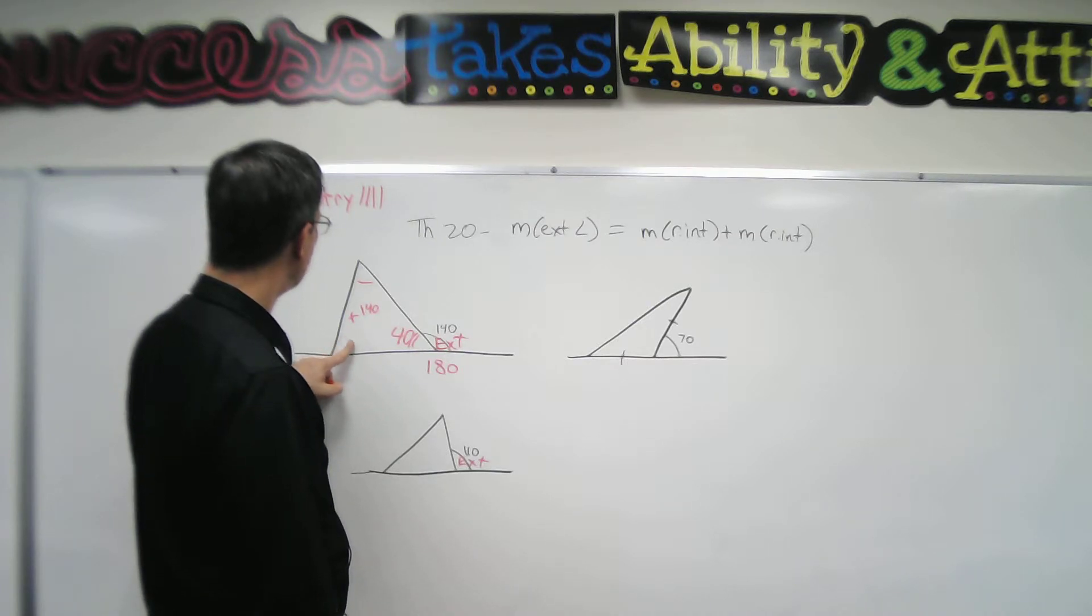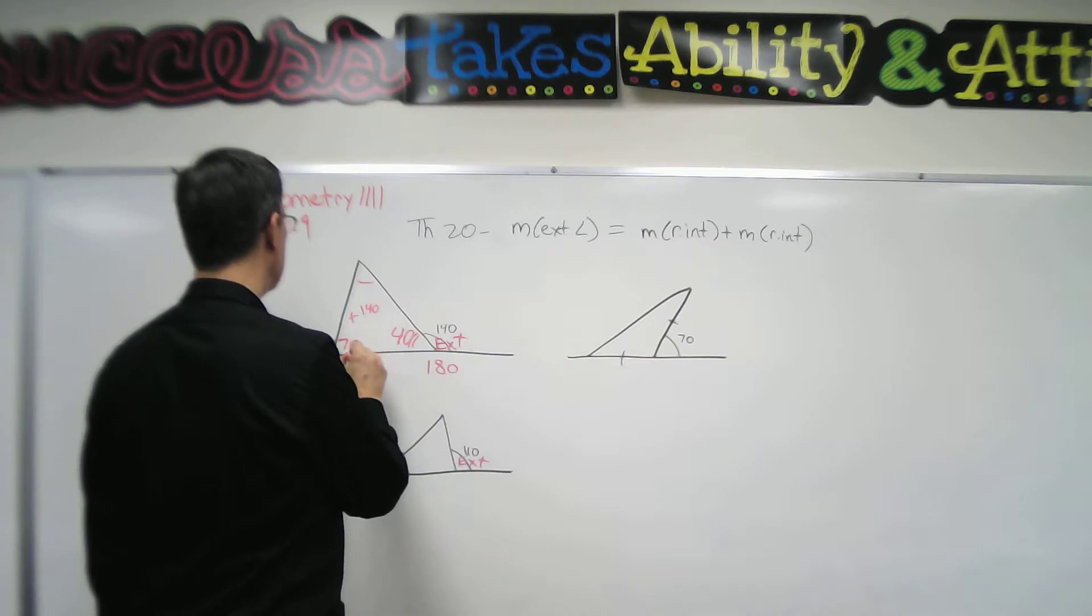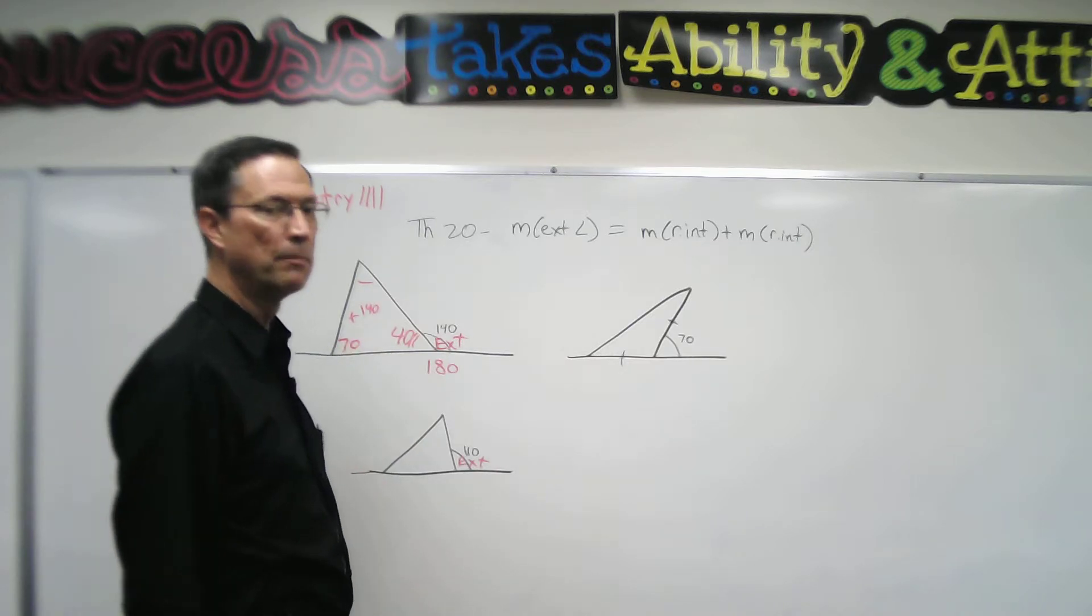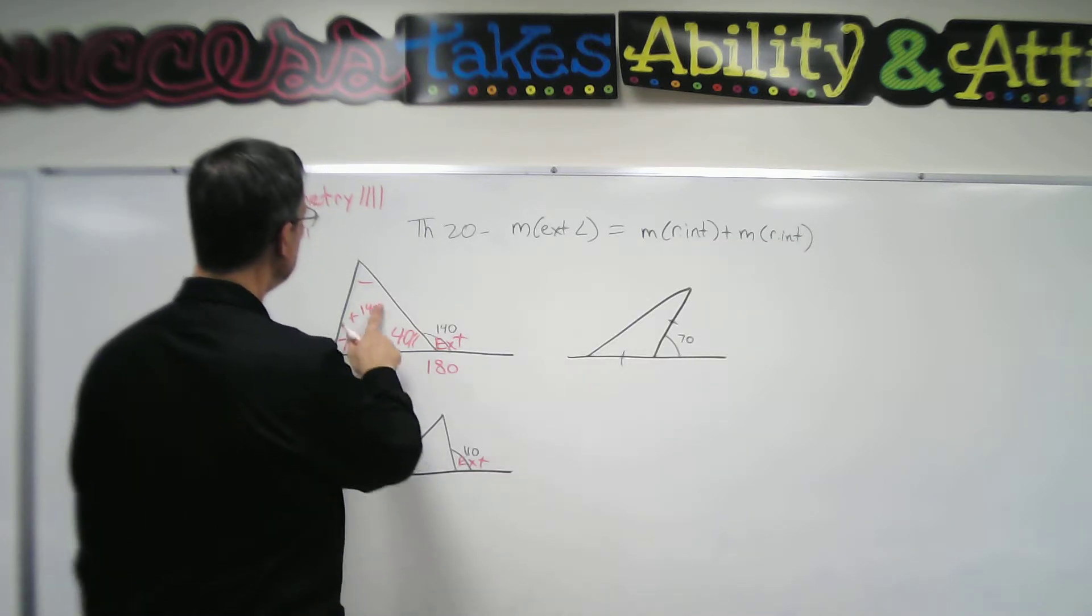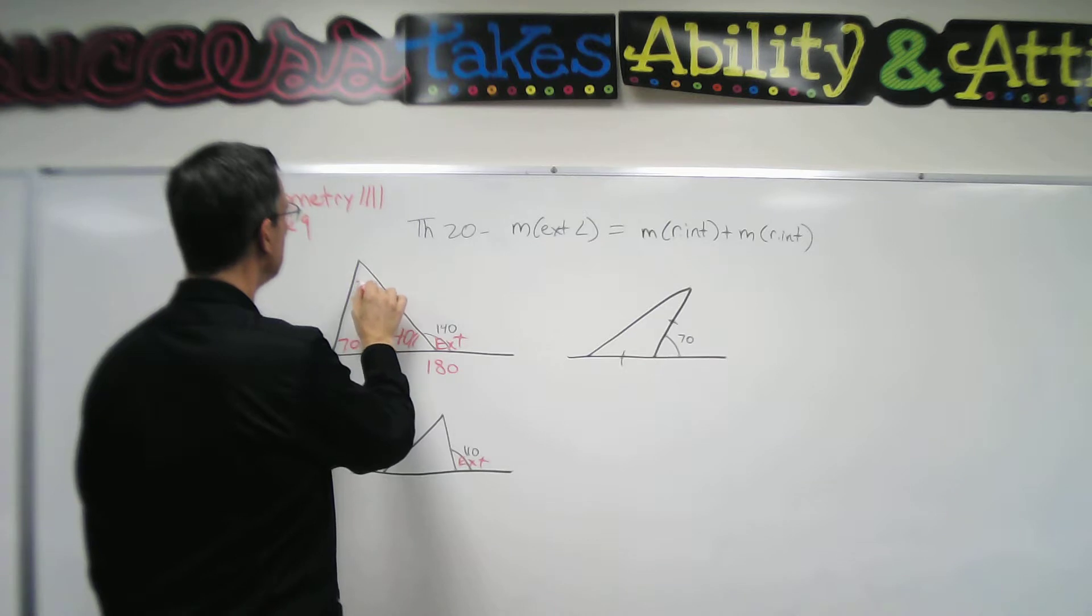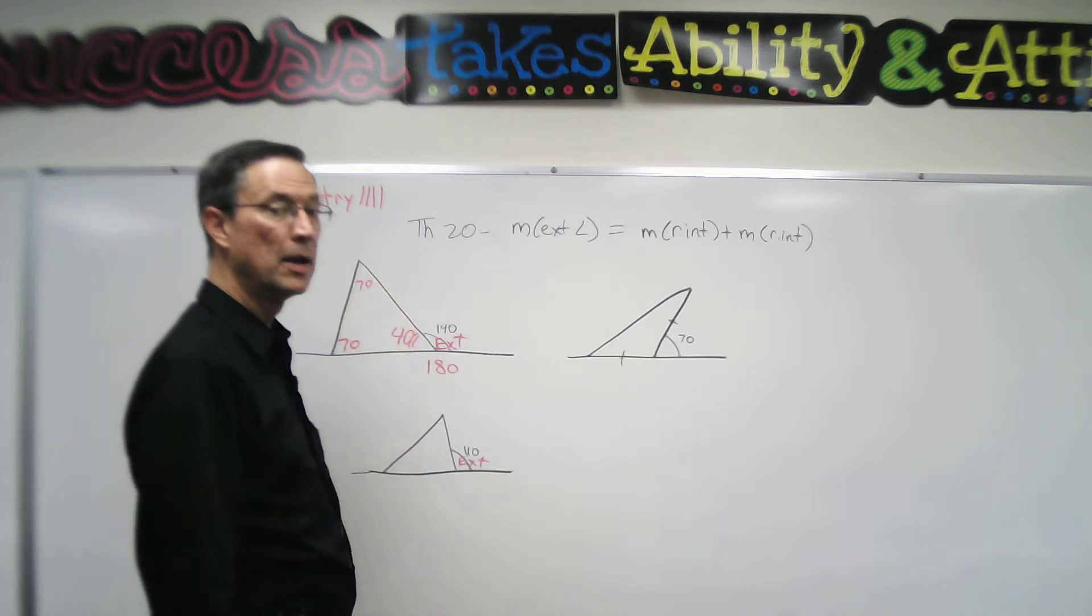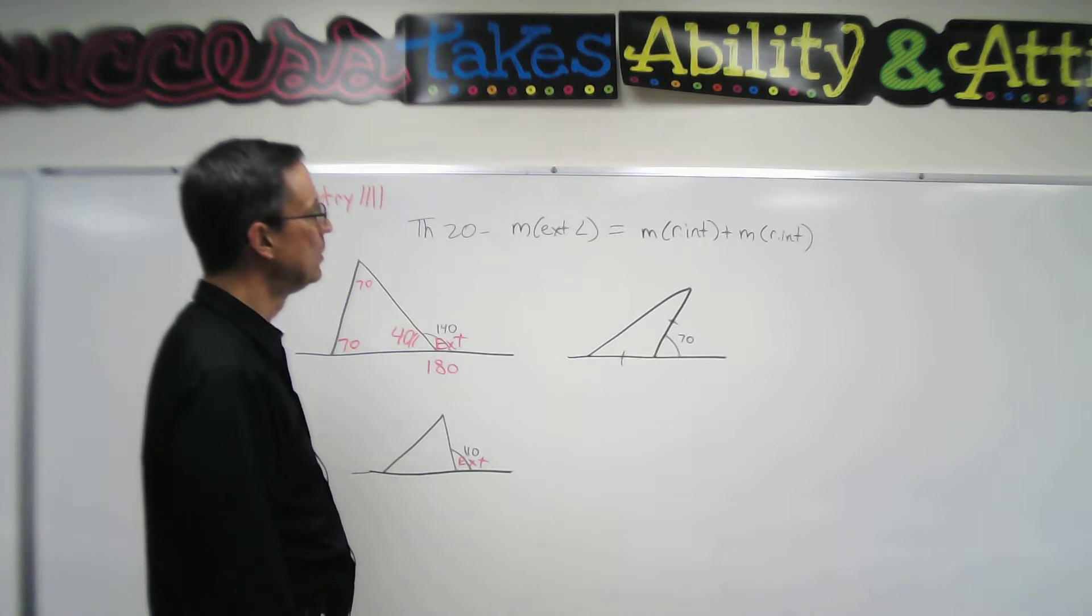Now if I knew that, for instance, this was, let's say, 70 degrees. So if that was 70 degrees and this over here was 40 degrees, then that means this angle up here would have to also be 70 because all three would have to add up to 180 degrees.